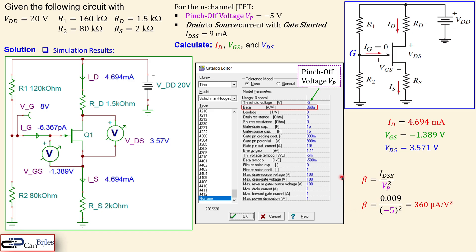That's our example for the JFET circuit with four-resistor biasing for stable operation. We calculated the drain current, the gate-to-source voltage, and the drain-to-source voltage, and also discussed the current relationships for specific VGS values. If you have any questions or comments about this example, please send them and I'll answer as soon as possible. See you next time — take care!